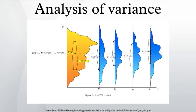Textbook analysis Using a normal distribution: The analysis of variance can be presented in terms of a linear model, which makes the following assumptions about the probability distribution of the responses: independence of observations. This is an assumption of the model that simplifies the statistical analysis. Normality: The distributions of the residuals are normal. Equality of variances, called homoscedasticity: The variance of data in groups should be the same.